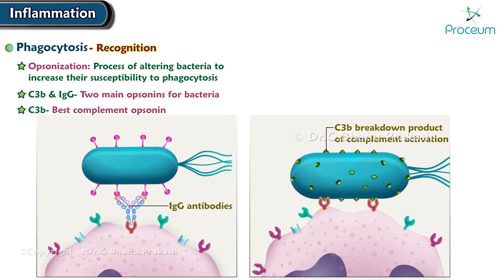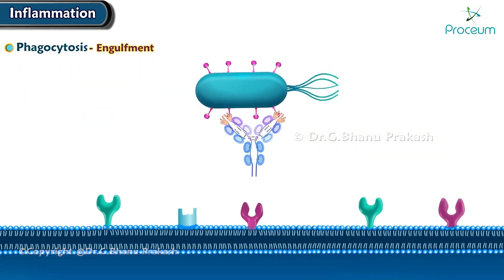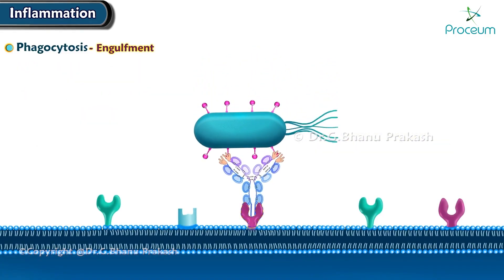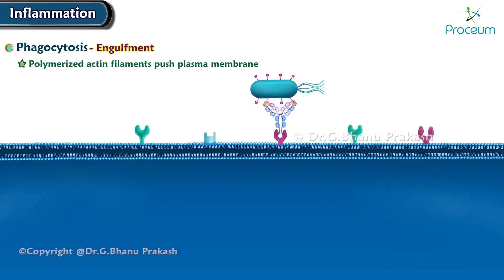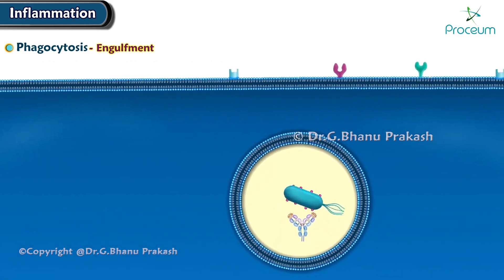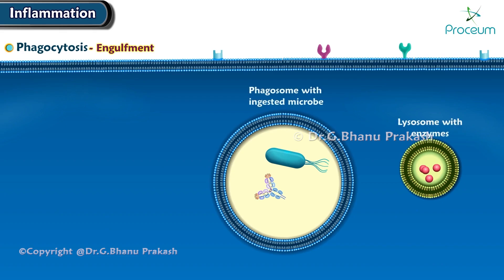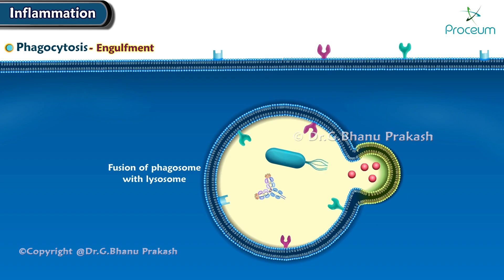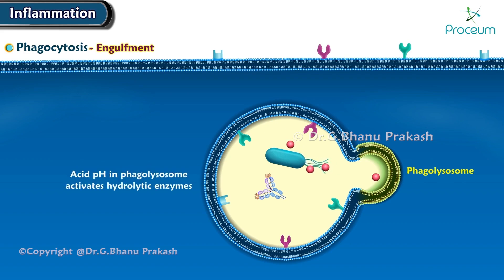The next step of phagocytosis is engulfment. After a particle is attached to the phagocyte receptor, polymerized actin filaments push the plasma membrane forward to form pseudopods, which surround the foreign material. The plasma membrane then pinches off to form a cytosolic vesicle, or phagosome, enclosing the particle. The phagosome fuses with cytoplasmic lysosomes to form a phagolysosome, into which lysosomal enzymes are released. The acid pH in the phagolysosome activates these hydrolytic enzymes, which then degrade the phagocytosed material.